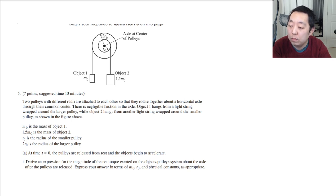M0 is the mass of object one, 1.5 M0 is the mass of object two, R0 is the radius of the smaller pulley, 2 R0 is the radius of the larger pulley. At time t equals zero, the pulleys are released from rest and the objects begin to accelerate. Derive an expression for the magnitude of the net torque exerted on the object's pulley systems about the axle after the pulleys are released. Express your answer in terms of M0, R0, and physical constants.